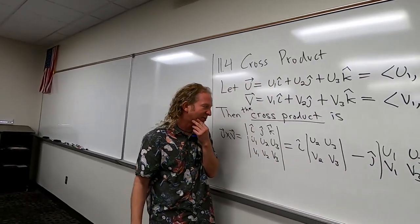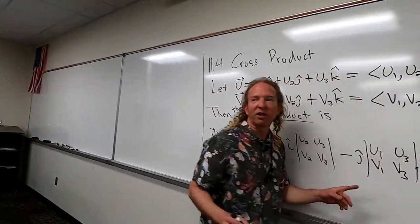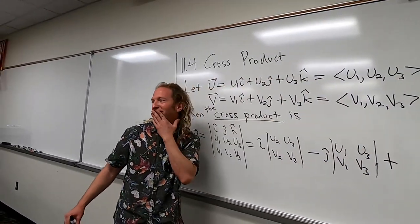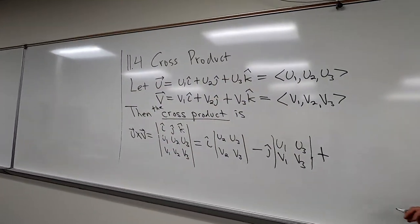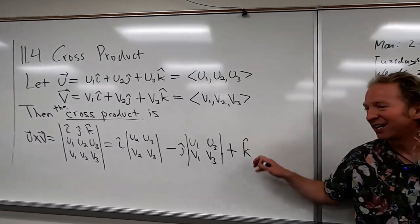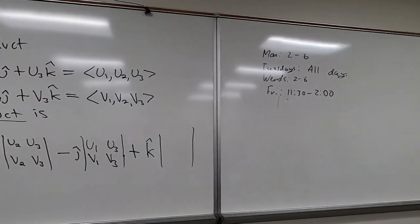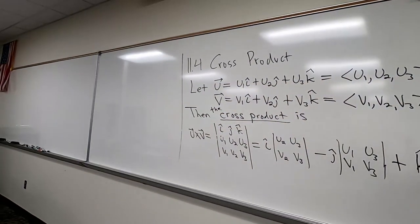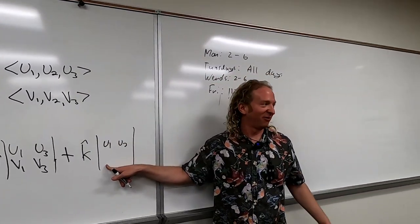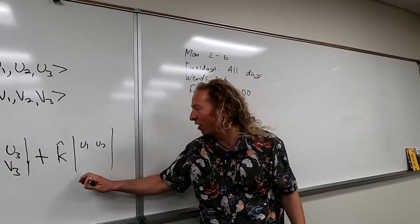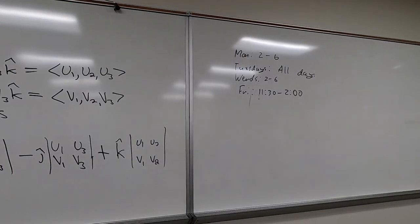The next one is plus, so plus k-hat. Then you get u1, u2, v1, v2. So the pattern is plus minus plus, and you cross out the row and column for each of i, j, k in turn. That's the calc 3 way — I accept it. I used to always reject it because the linear algebra way is a little different.